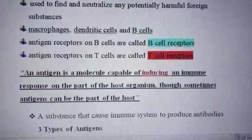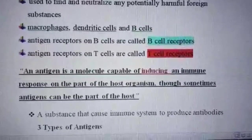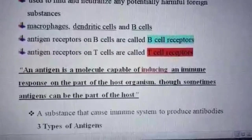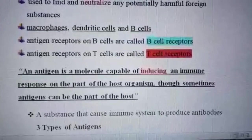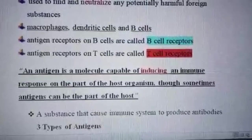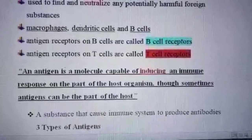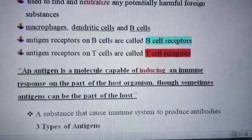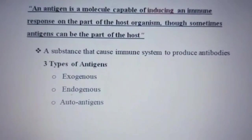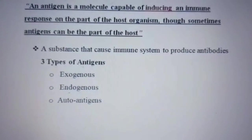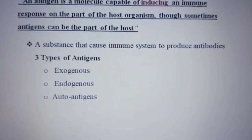An antigen is a molecule that is capable of inducing an immune response on the part of the host organism. Though sometimes antigens can be part of the host cell, as in the case of blood group antigens. Antigens are classified into three types: exogenous antigens, endogenous antigens, and auto antigens.